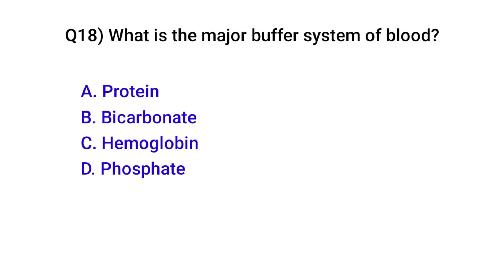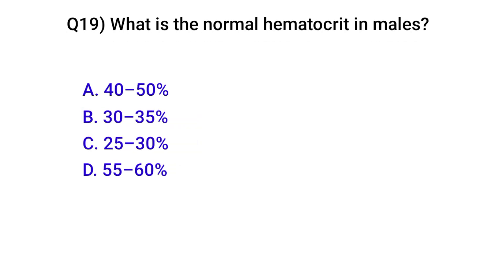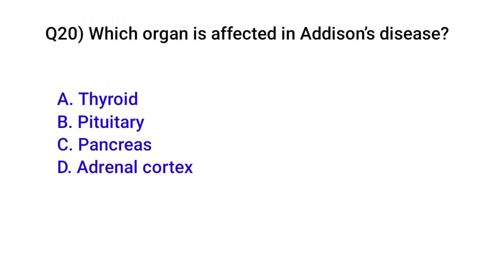Question number eighteen: What is the major buffer system of blood? Correct option is B: Bicarbonate. Question number nineteen: What is the normal hematocrit in males? Correct option is A: 40 to 50 percent.